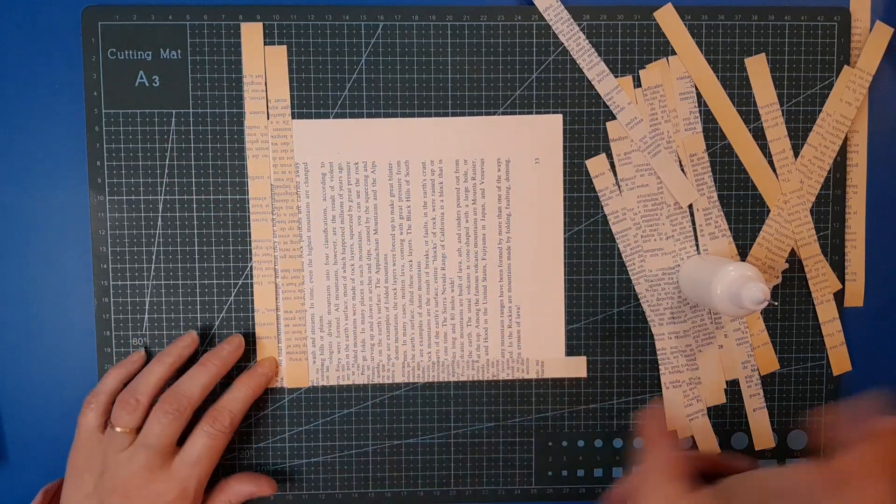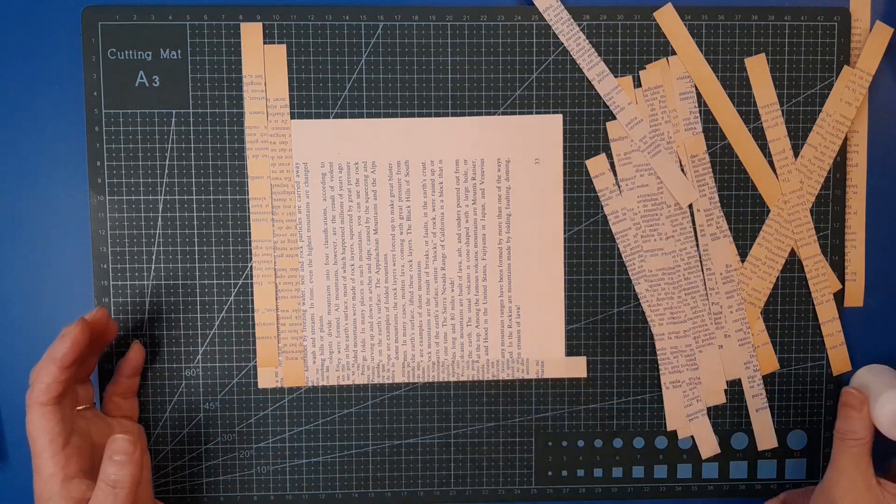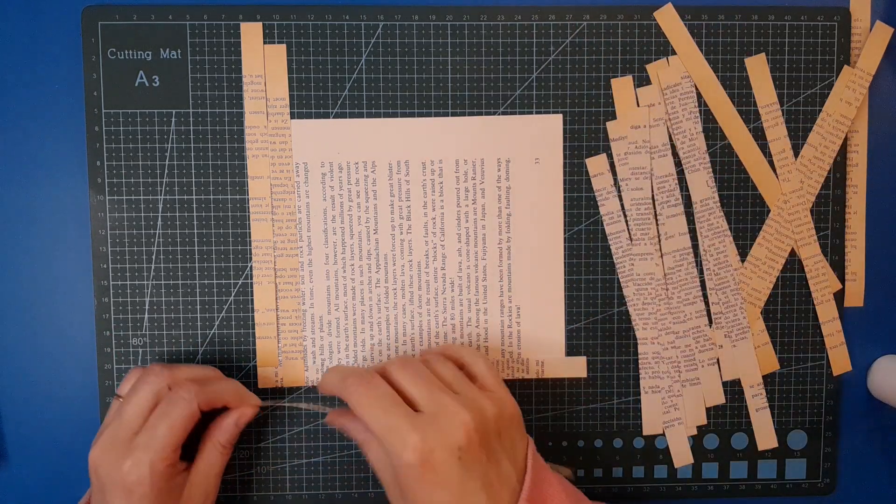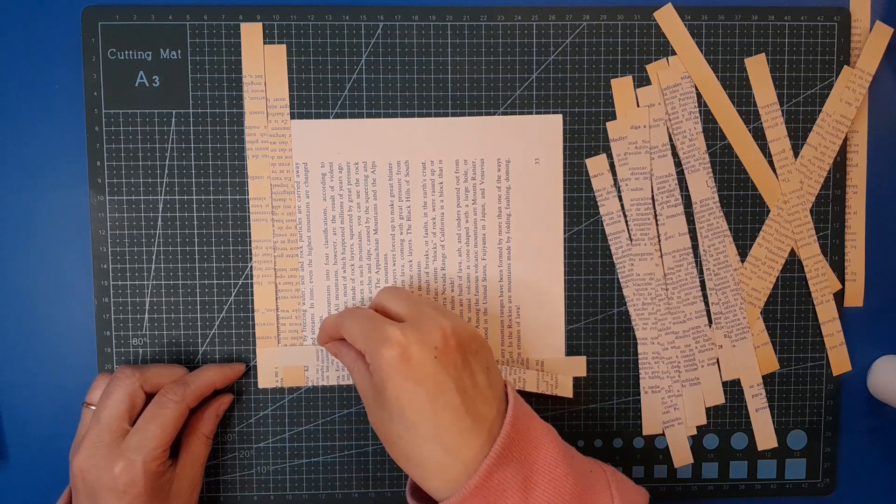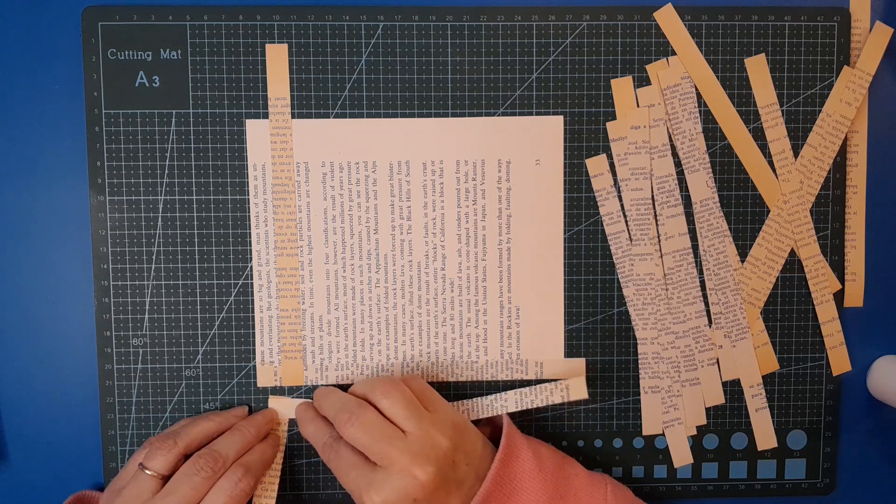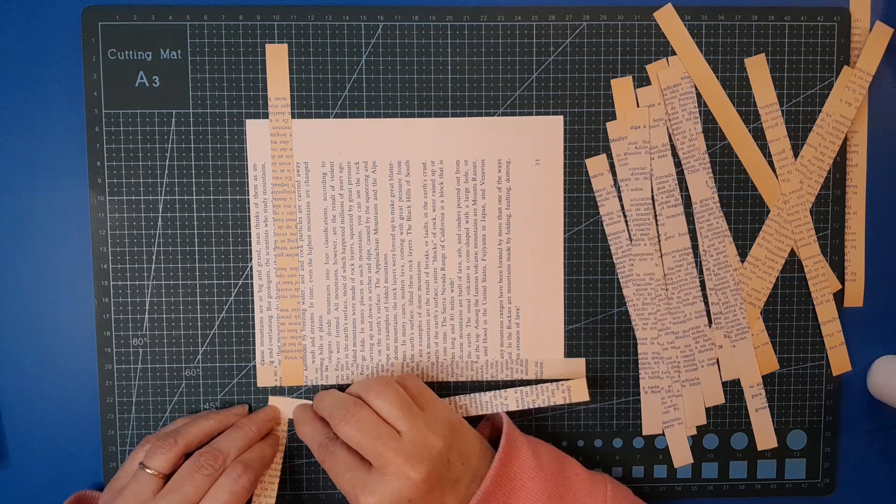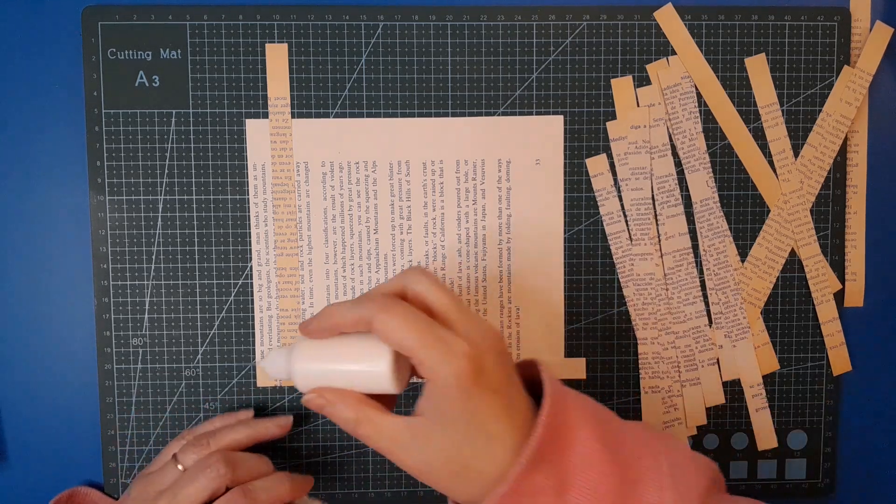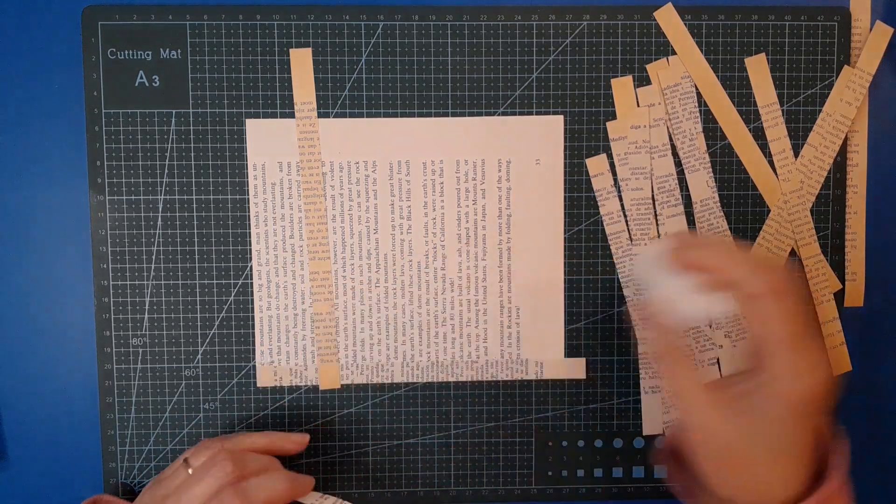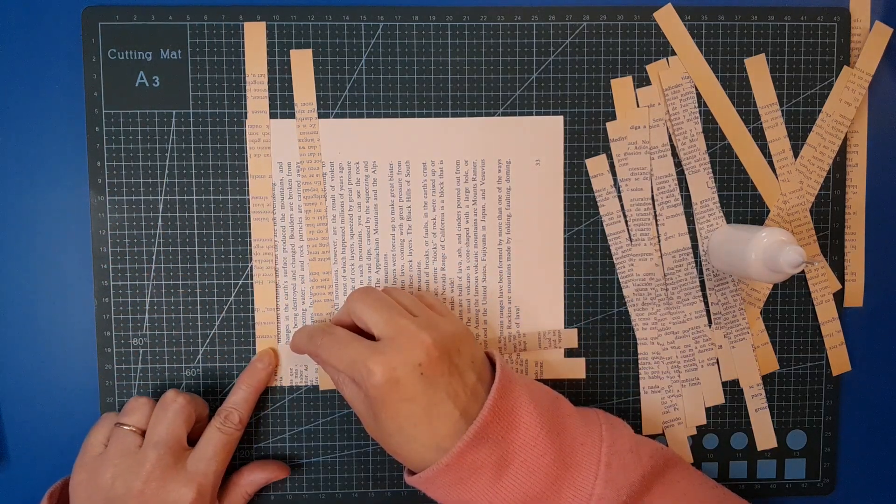The problem with that is this one needs to go underneath that, so before it sticks down, let's just peel it up and stick it there. We wouldn't need to actually peel it up, we could just do the same thing as what we did. Put a bit of extra glue there because I've wrecked it, so let's line that one back up.